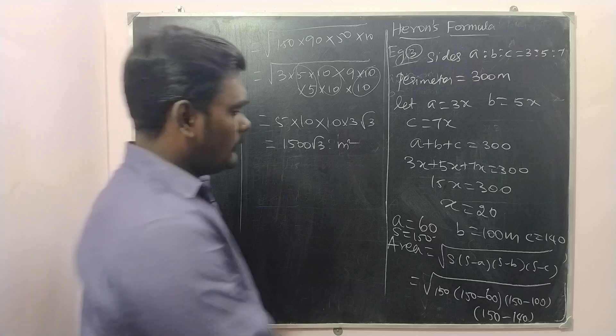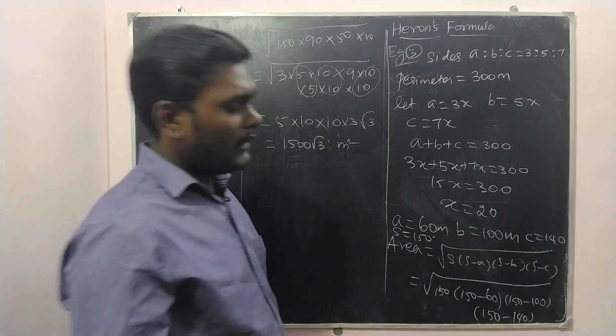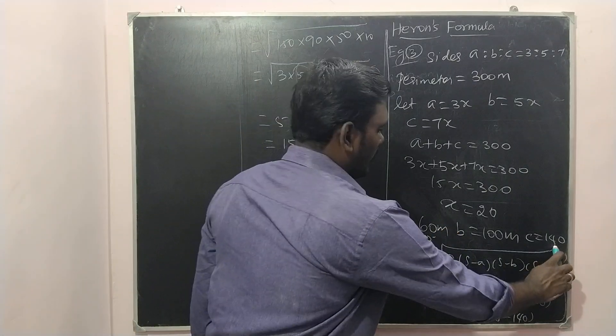Here when you write a, b, c also, a is 60 meter, b is 100 meter, c is 140 meter.